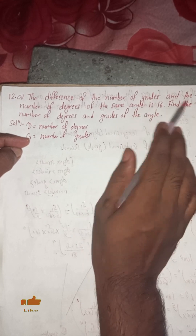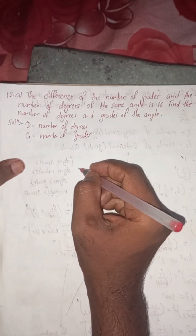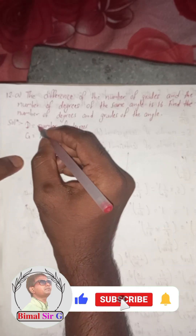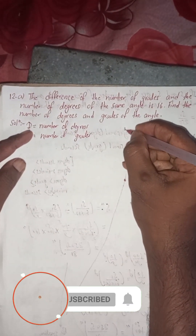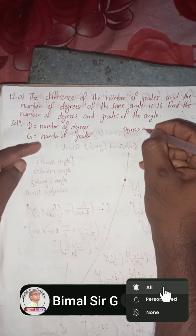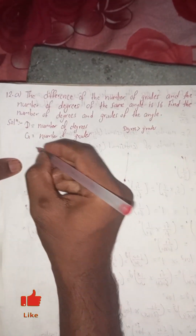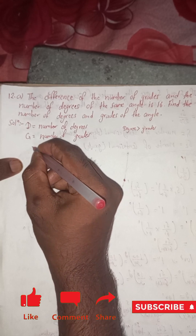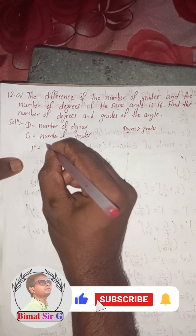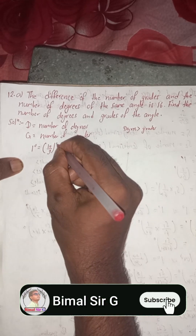Number of grades is G and number of degrees is D of the same angle, and their difference is 16. Now our flowchart is that we will start from degrees and convert into grades.